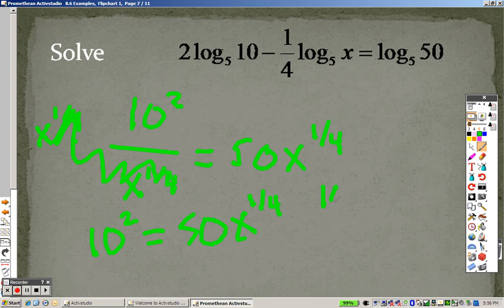So you have 10 squared equals 50 x to the 1 fourth. That's like saying 100, because that's what 10 squared is, equals 50 x to the 1 fourth. I divide by 50 on both sides, and I end up getting 2 equals x to the 1 fourth. And to solve for something to the 1 fourth power, you take it to the 4th power. So 2 to the 4th, x equals 16 is your answer.